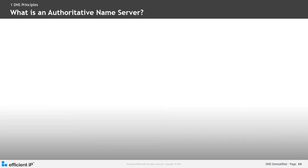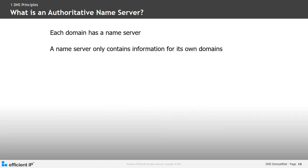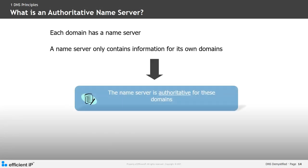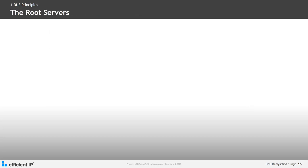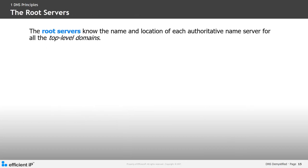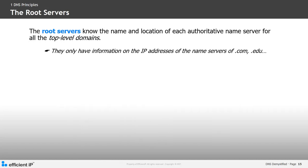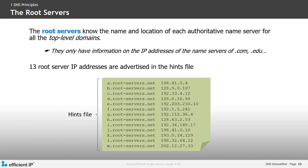Each domain has a name server. When a name server only contains information for its own domains, that name server is considered to be authoritative for those domains. The root servers know the name and location of each authoritative name server for all the top-level domains, such as .com and .edu. The 13 public root server IP addresses are advertised in a HINTS file. Your local DNS server will maintain this file so it can forward requests for those domains to the appropriate server.